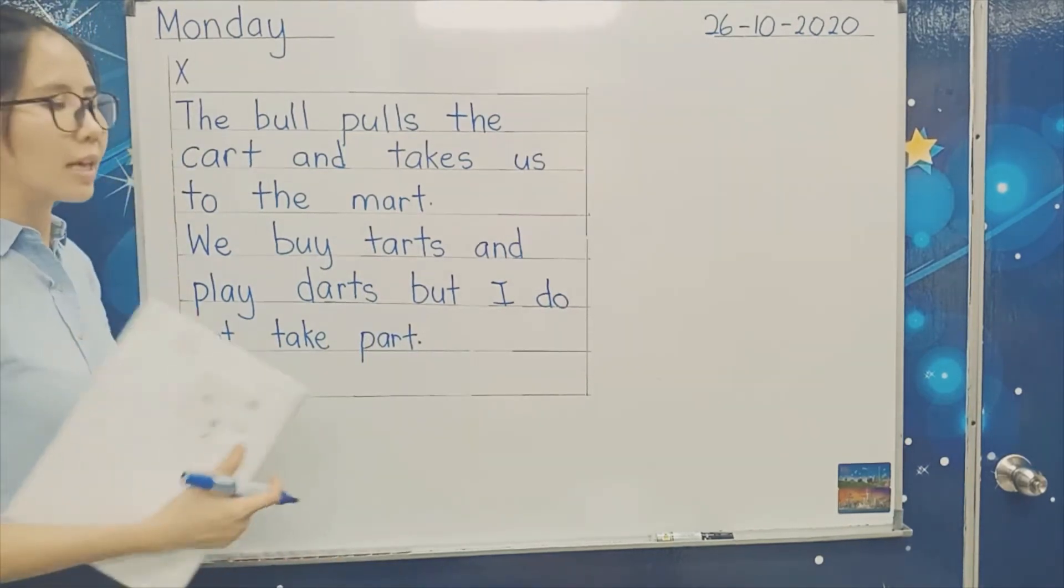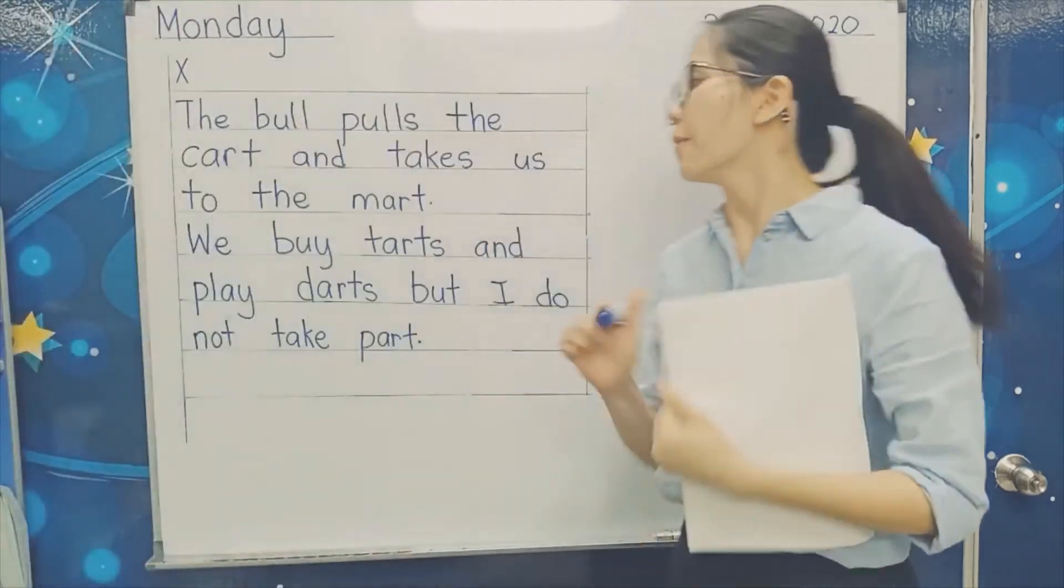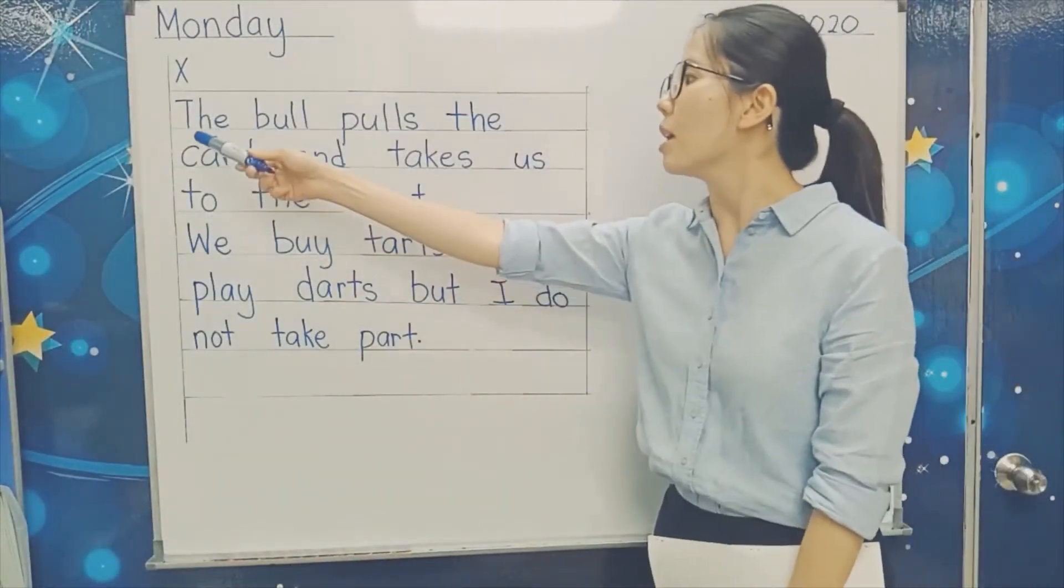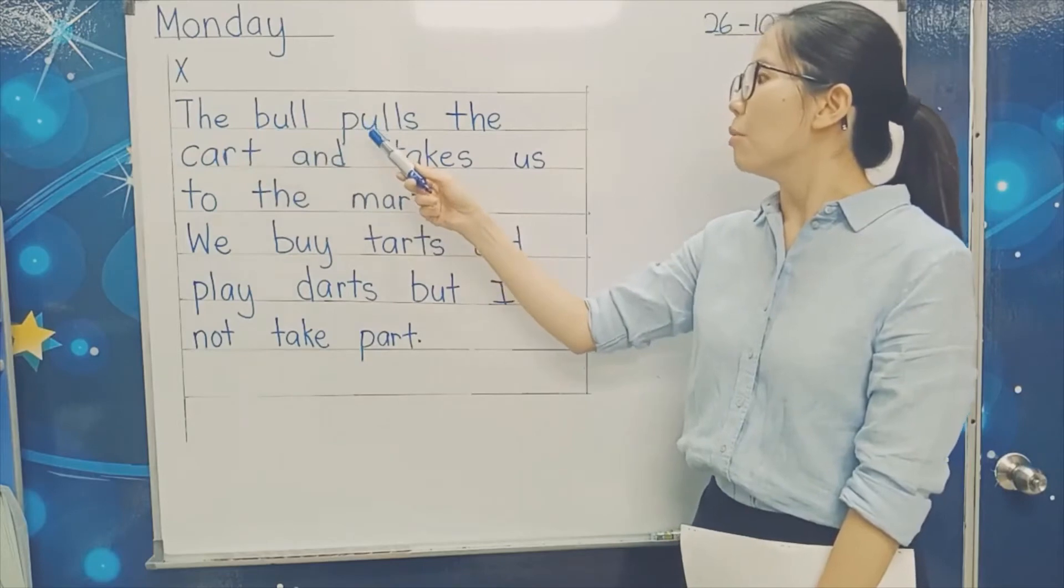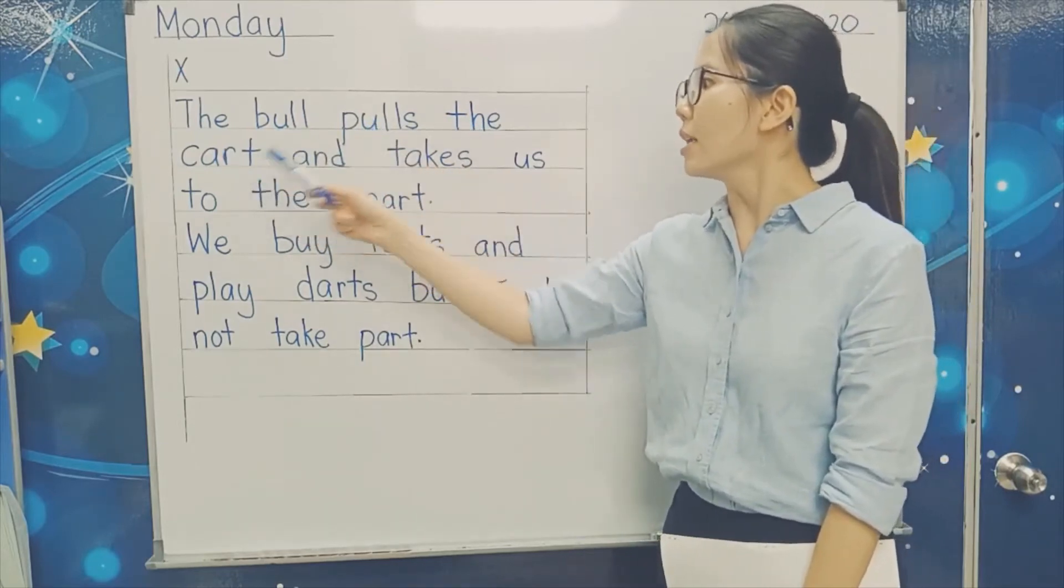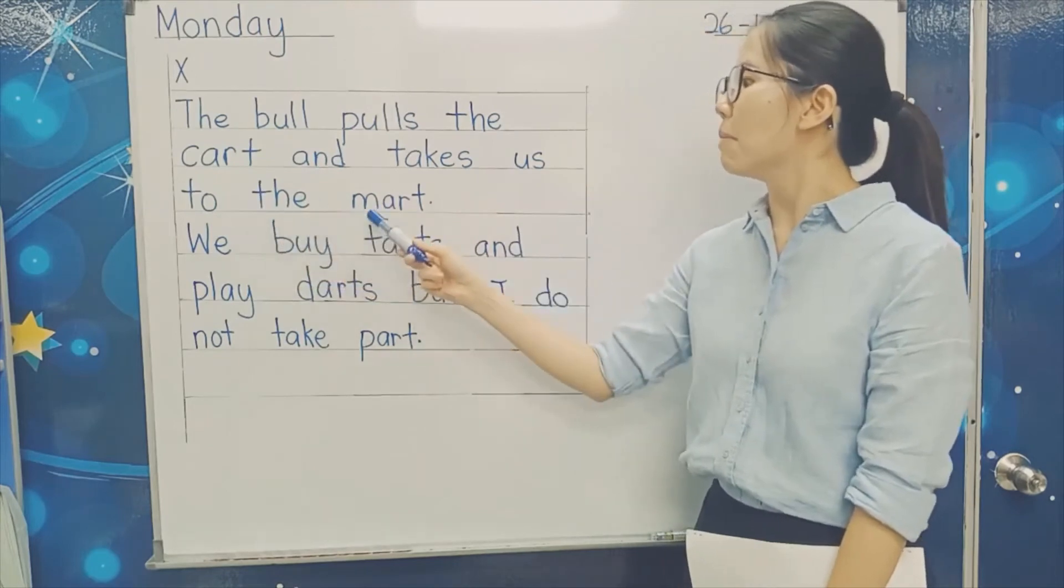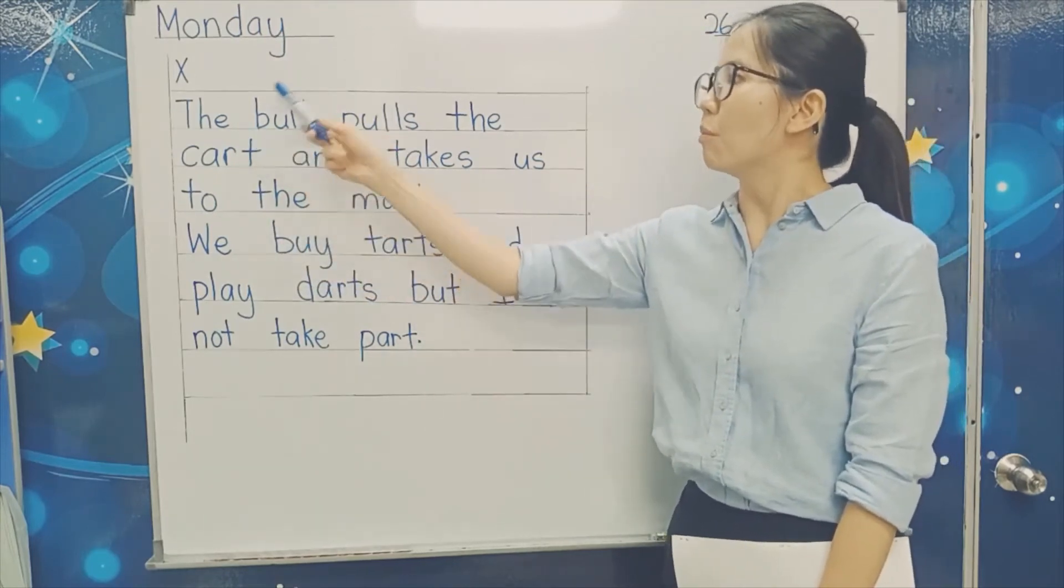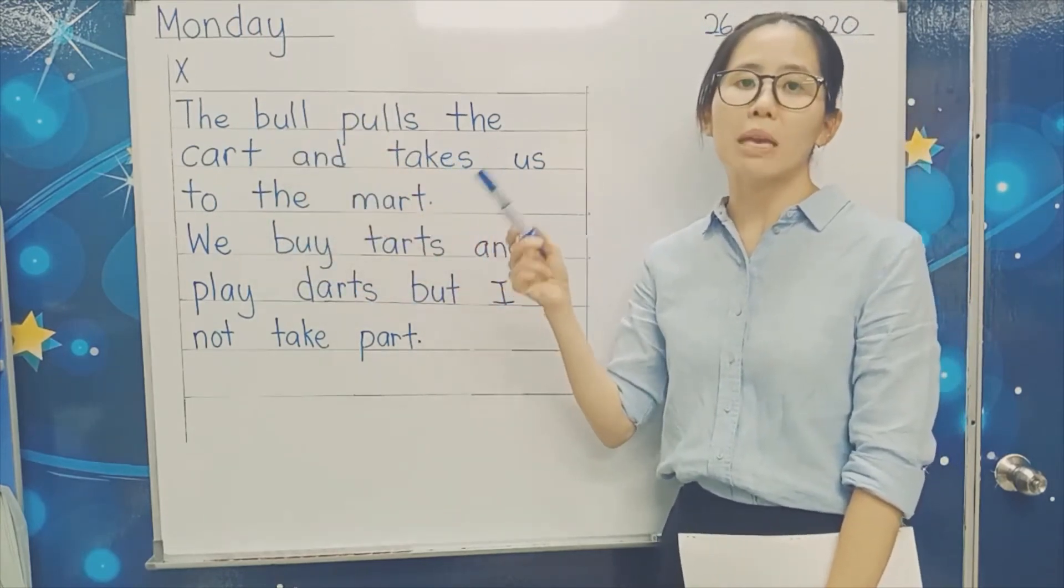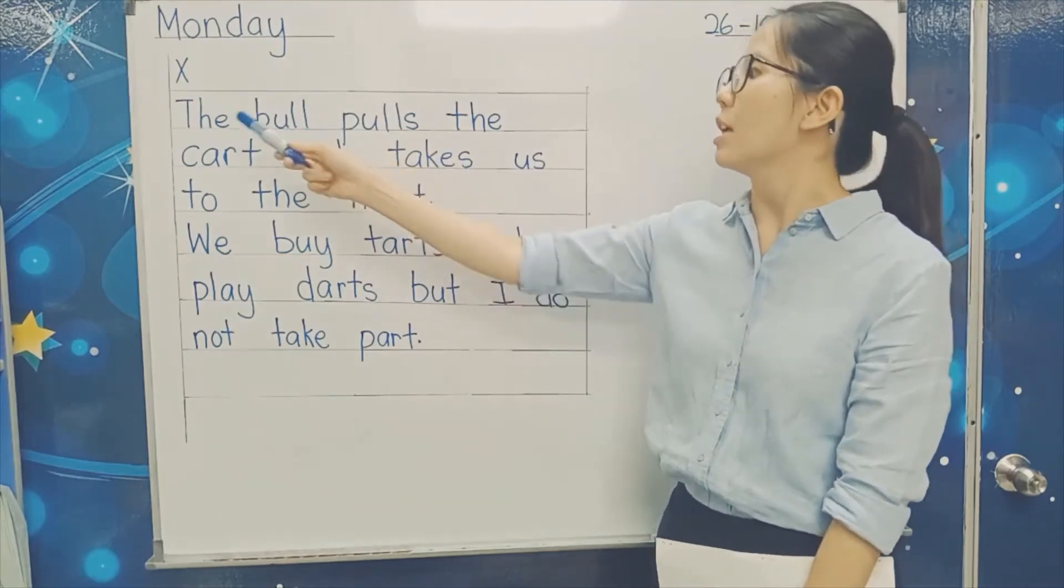So let's read together. I'm going to stand on this side. Let's read together. The bull pulls the cart and takes us to the mart. So what is bull? Bull means it's a cow, it's a male cow. That's why you call it bull.